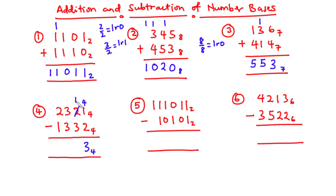Next, 1 minus 3 is not possible, so we borrow from the next digit which is 3 — it becomes 2, and we borrow 4. So 4 plus 1 is 5, and 5 minus 3 is 2. Then 2 minus 3 is not possible, so we borrow again — that digit becomes 1 and we borrow 4. So 4 plus 2 is 6, and 6 minus 3 is 3.